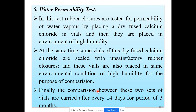The fifth quality control test is the water permeability test. In this test, rubber closures are tested for the permeability of water vapor by placing dry fused calcium chloride in a vial, and then they are placed in an environment of high humidity. Some vials sealed with unsatisfactory rubber closures are also placed in the same environmental condition for the purpose of comparison.